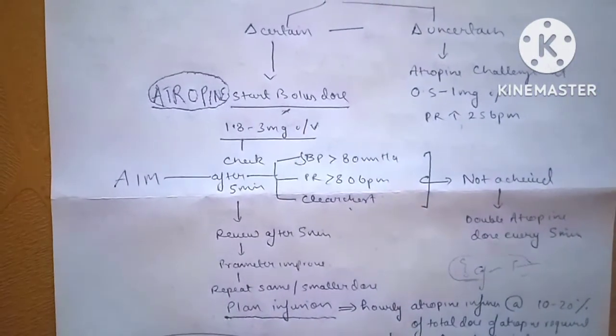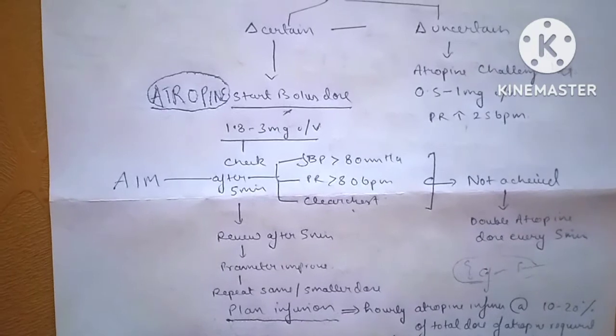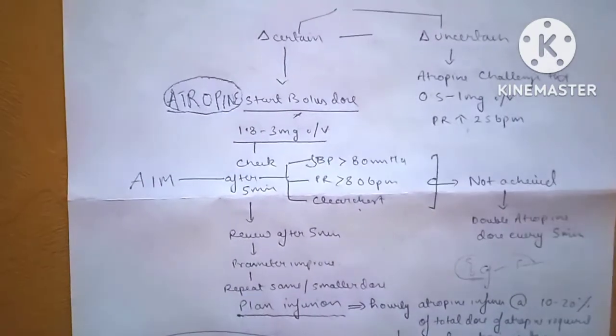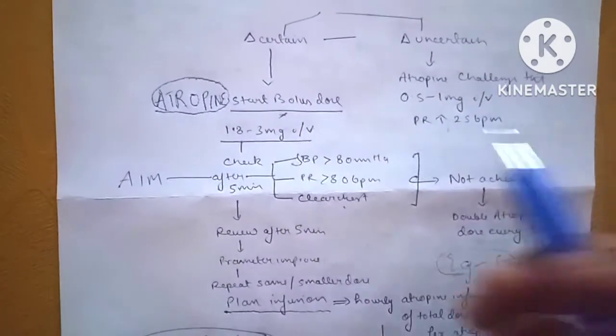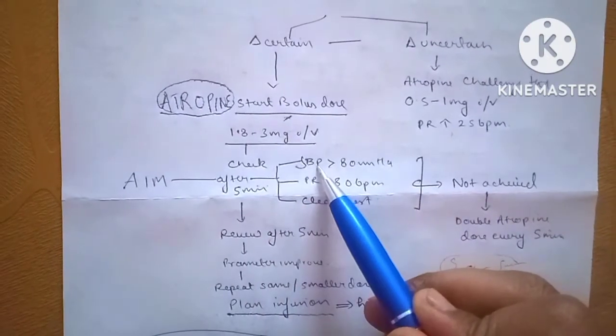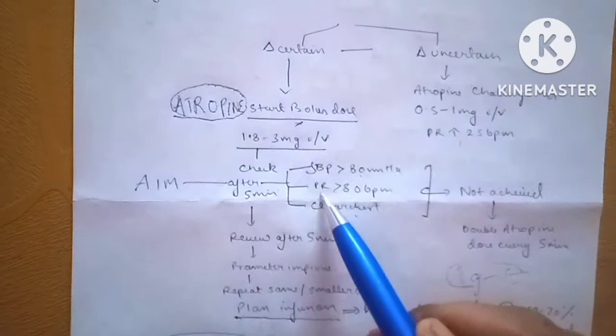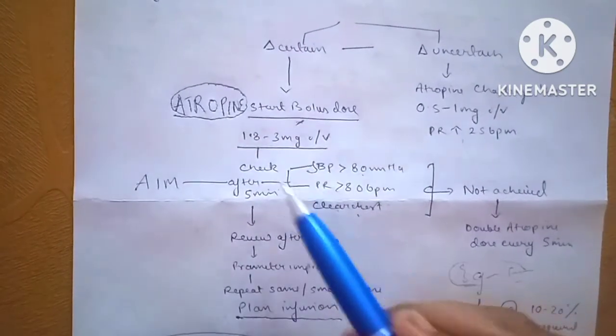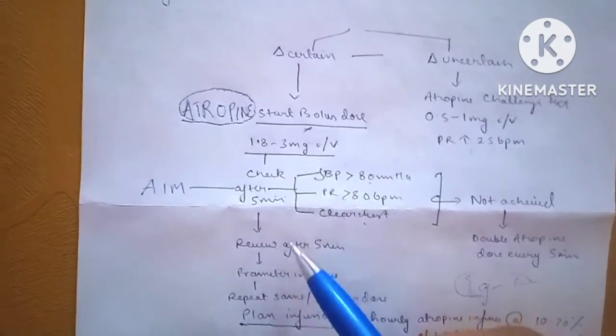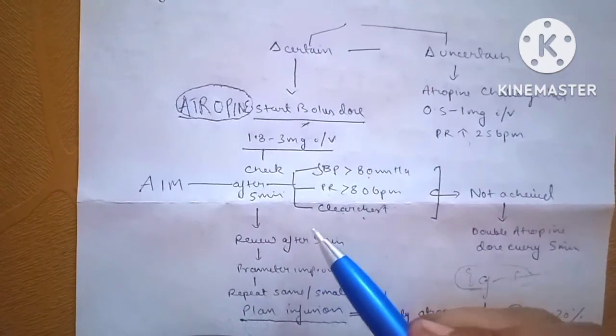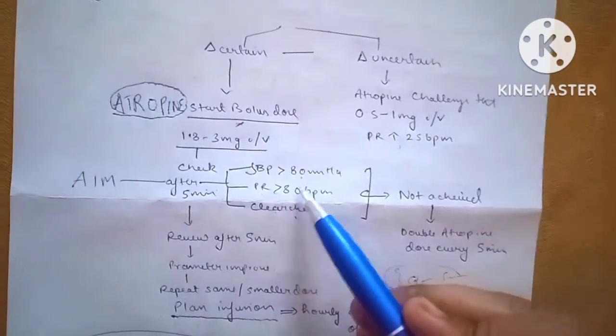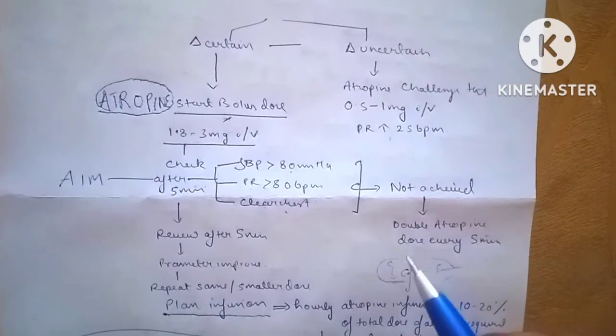This dose that is given by bolus is given until we achieve the atropinization dose. The aim is to look for systolic blood pressure of more than 80 mmHg, pulse rate of more than 80 beats per minute, and clear chest. Look for these three parameters every five minutes until we achieve the aim. We continue doubling the dose of atropine every five minutes if these aims are not achieved.